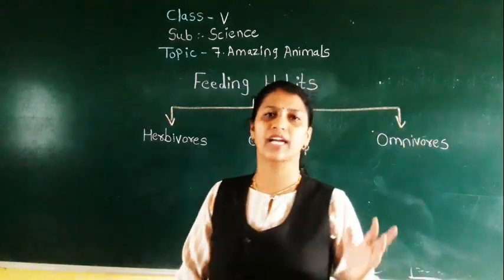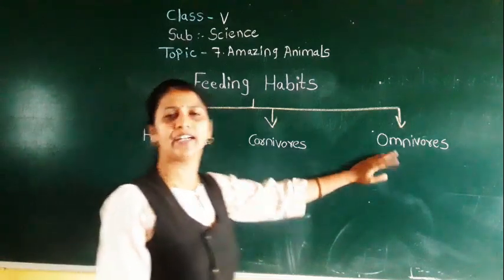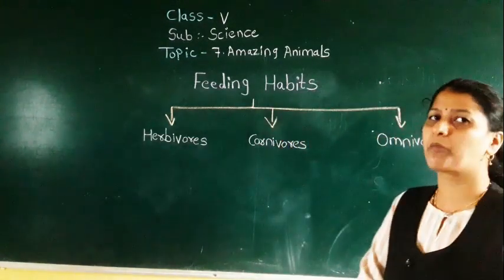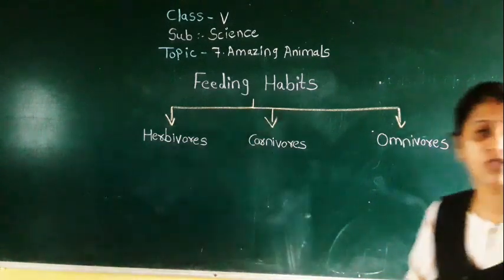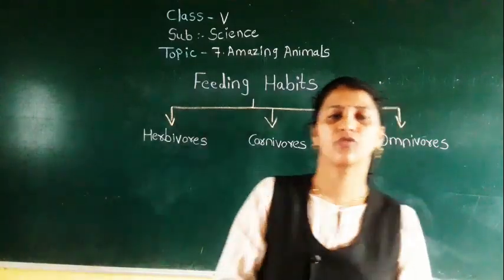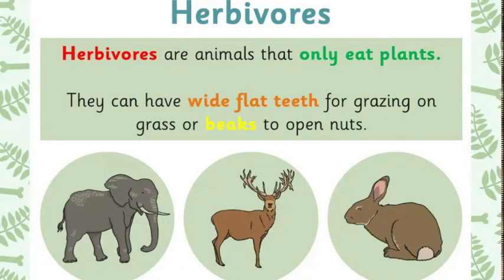You have already been learning about herbivorous, carnivorous, and omnivorous since class third. According to the habitat, animals develop their body and need food to survive. The animals which can only eat plants are called herbivorous animals. For example: cow, giraffe, and goat. These animals only depend on plants or grass.